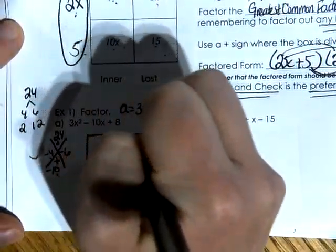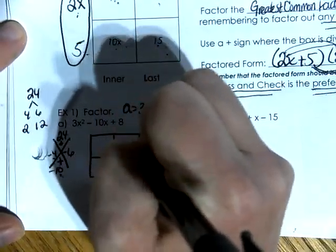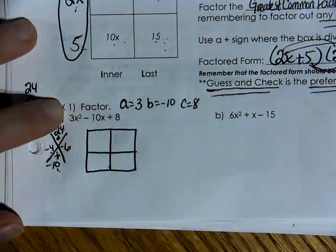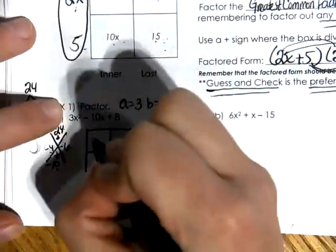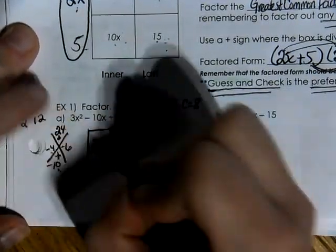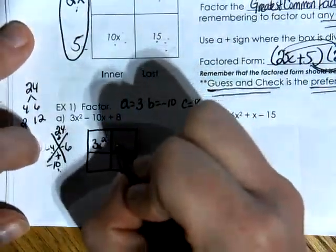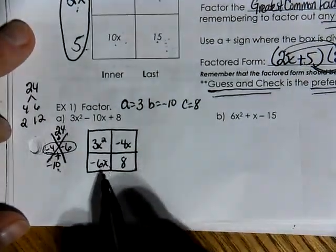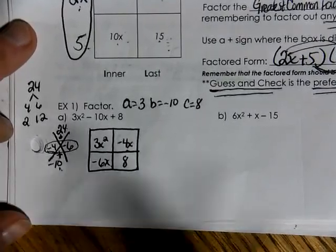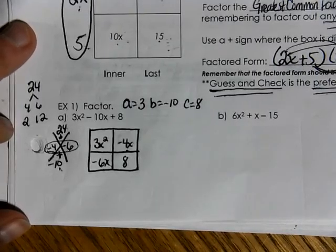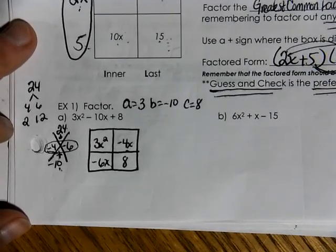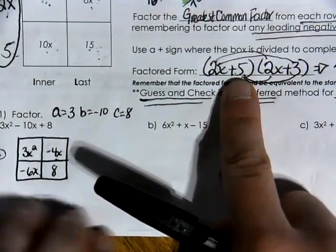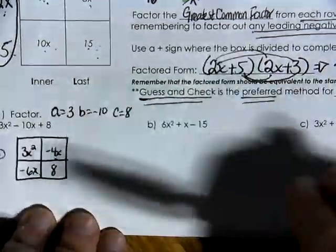Create a 2 by 2 box: first box is 3x squared, last box is positive 8, sides are negative 4x and negative 6x. Looking at 3x squared and negative 6x: both share a 3 and an x, so bring out 3x. What times 3x equals 3x squared? That's x on the outside. What times 3x equals negative 6x? That's negative 2 on the outside. What times negative 2 equals positive 8? That's negative 4.